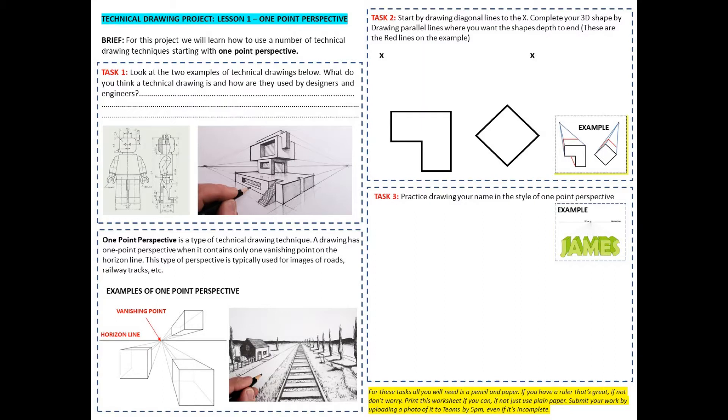Just once you've done that, just under task one, I've got an example more specifically of a one point perspective drawing. This is obviously a type of technical drawing and it's a drawing that has a one point perspective when it contains only one vanishing point on the horizon line and it's a type of perspective that is typically used for images of roads like my example and railway tracks.